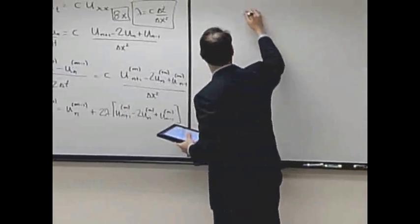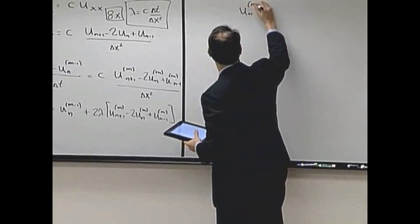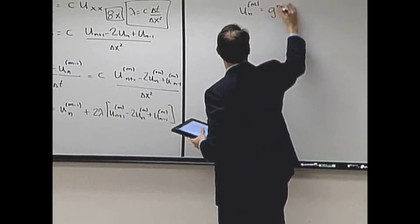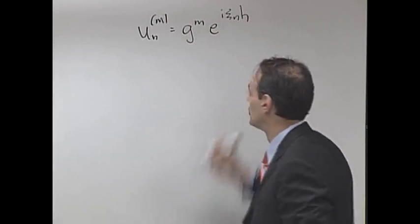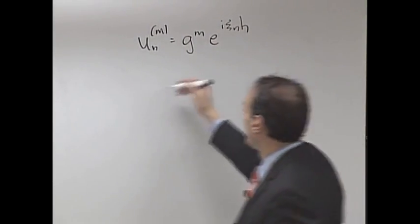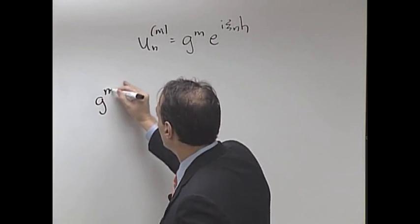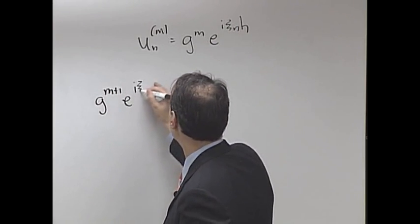So we're going to plug in our u_n^m equals g to the mth power, e to the i c of mh. So again, you start plugging this in, you get g of m plus 1, e to the i c of mh.